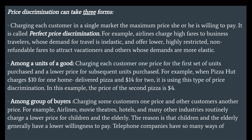Second, charging each consumer one price for the first set of units purchased and a lower price for subsequent units purchased. For example, when Pizza Hut charges $10 for one home-delivered pizza and $14 for two, it is using this type of price discrimination. In this example, the price of the second pizza is $4.